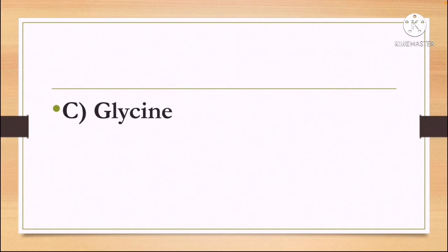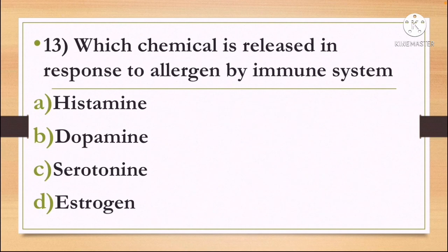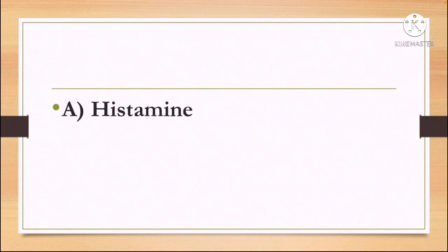Next question: which chemical is released in response to an allergen by the immune system? Option A: Histamine, Option B: Dopamine, Option C: Serotonin, and Option D: Estrogen. The correct answer is Option A, Histamine.